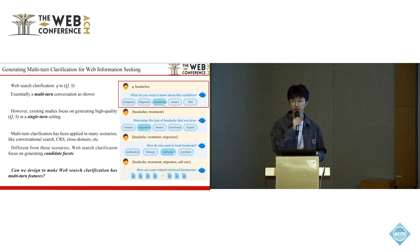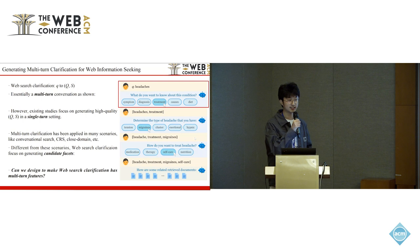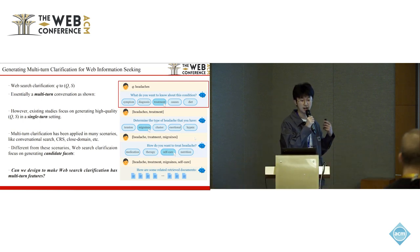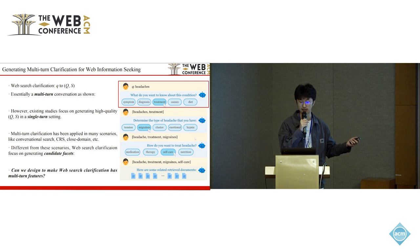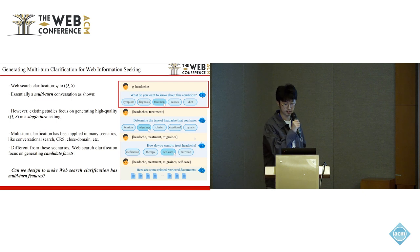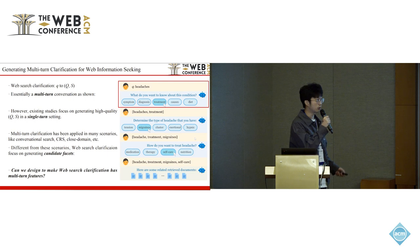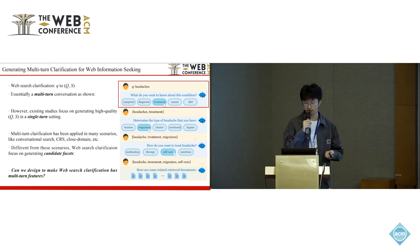So what is web search clarification? When a user issues a query, the query can be faceted or ambiguous. At this time, the clarification system can generate a clarifying question Q and provide several candidate facets S. For example, the user queries 'headaches' and the system can ask, what do you want to know about this medical condition? And provide several facets like the symptom, diagnosis, treatment, and so on.